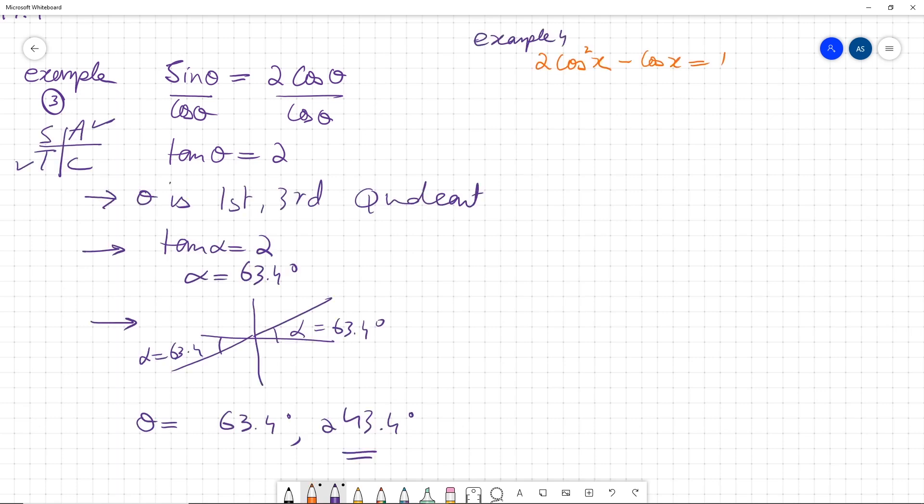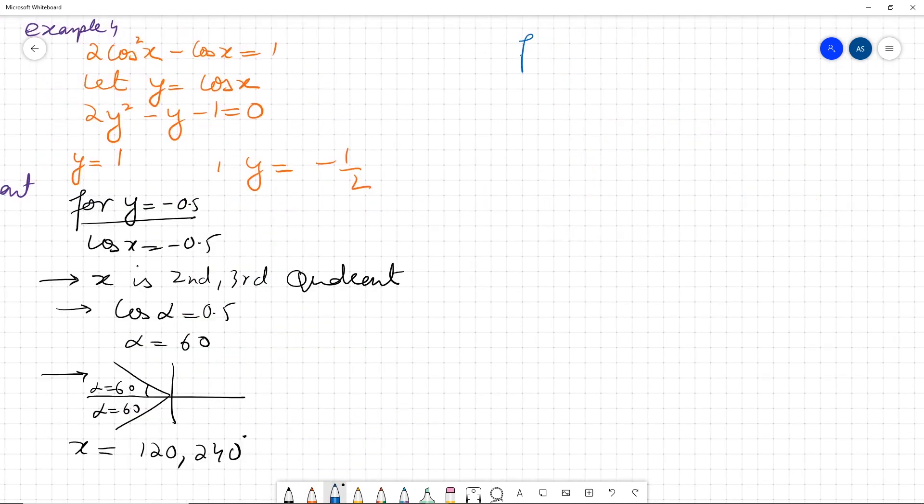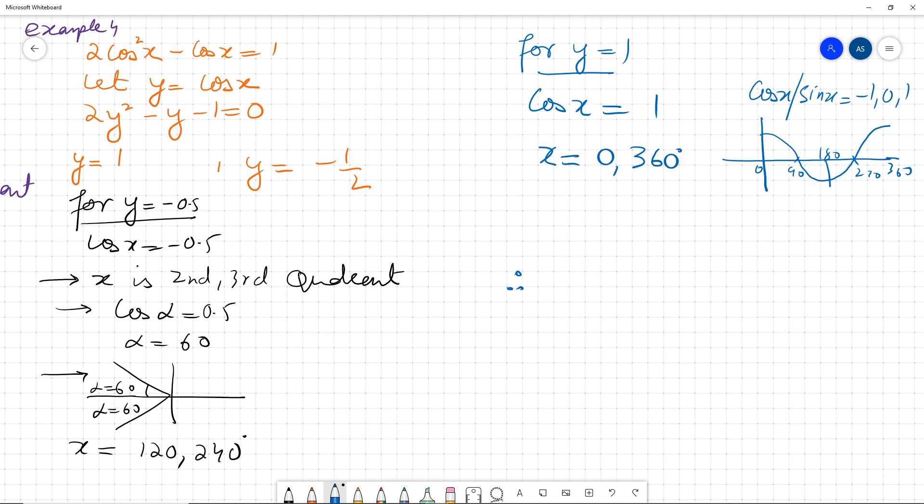Example four: We have a trigonometric equation with only one trigonometric ratio, but with powers of one and two. We have to do suitable substitution so the given equation can be transformed into a quadratic one. We will solve for these two values of y separately. The final answers are these five. We will write these answers in ascending order: 0, 120, 240, and 360.